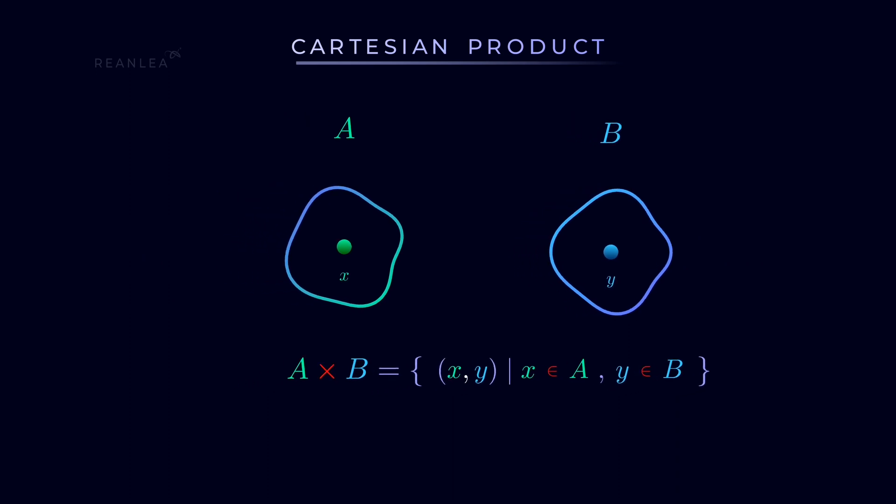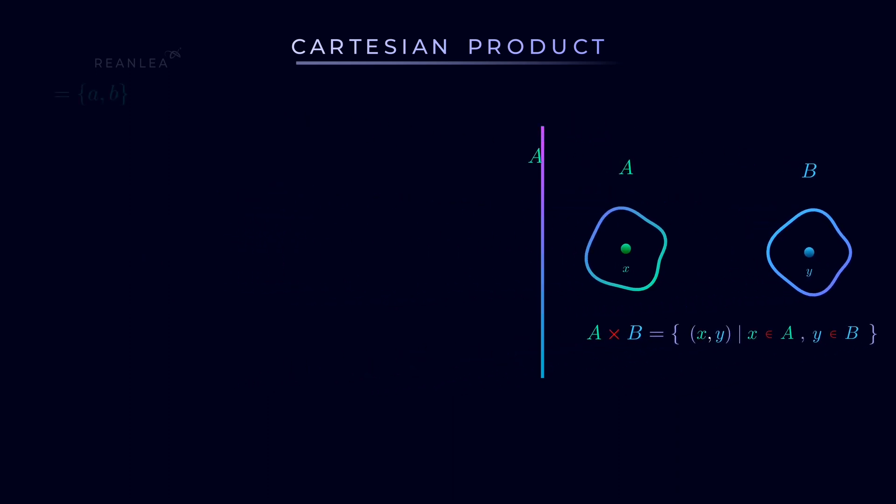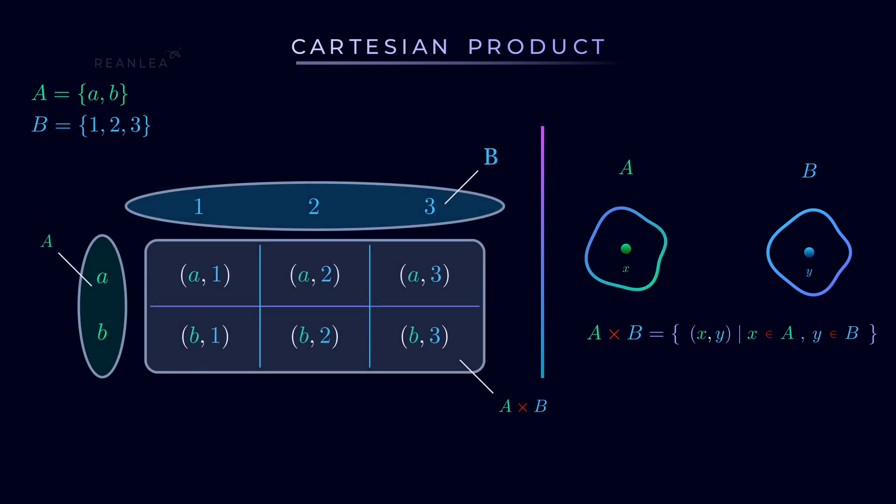For an example, let us consider A to be a set collection of elements a and b, and B is a set collection of elements 1, 2 and 3. Then the Cartesian product of A and B is the collection of ordered pairs (a,1), (a,2), (a,3) and (b,1), (b,2), (b,3). Now a table can be created by taking the elements as a set of columns and a set of rows respectively to represent the Cartesian product of these two sets.